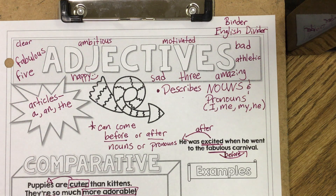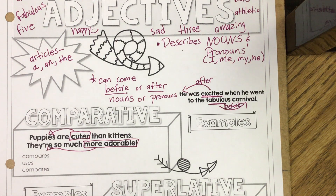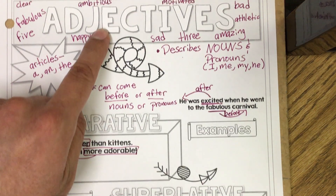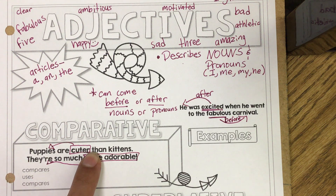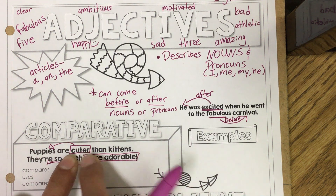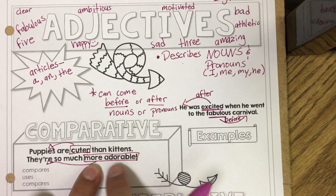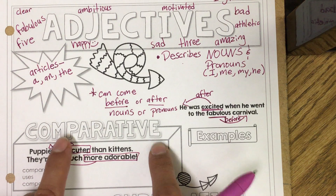Now if you're ready, unpause and let's look at the middle part. Overall we have adjectives, but there are three different types of adjectives. The first type is comparative adjectives. We're going to look at the words 'cuter' and 'more adorable' — these are comparative adjectives.